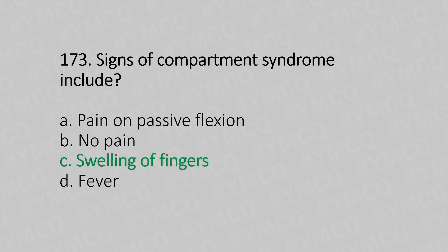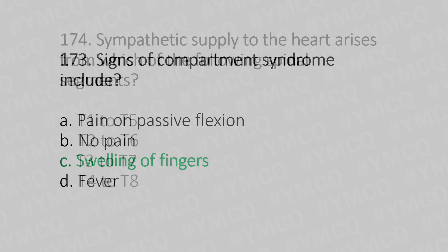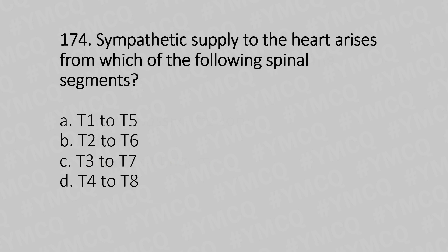Question 174: Sympathetic supply of the heart arises from which of the following spinal segments? Option A: T1 to T5, Option B: T2 to T6, Option C: T3 to T7, Option D: T4 to T8. And the answer is Option A, T1 to T5.